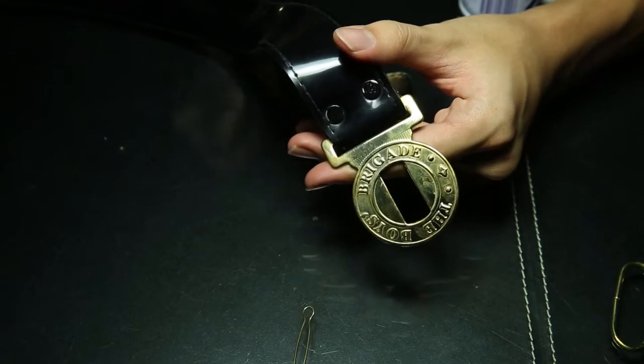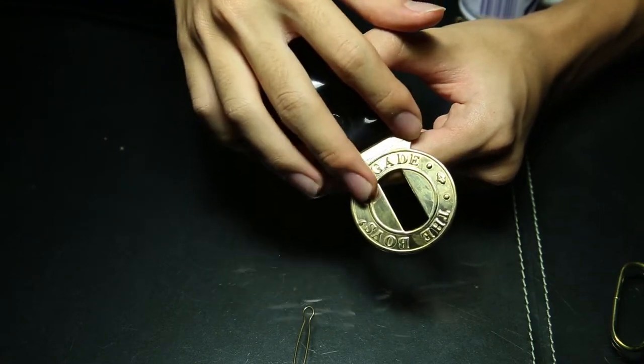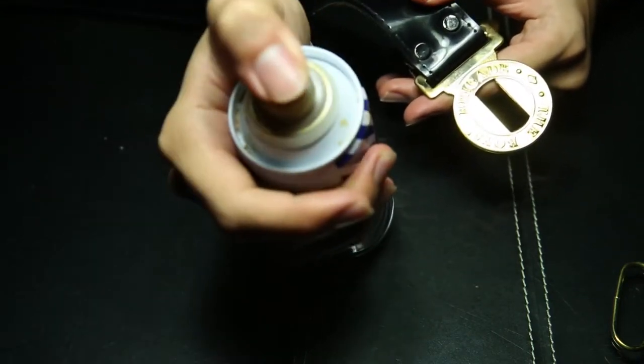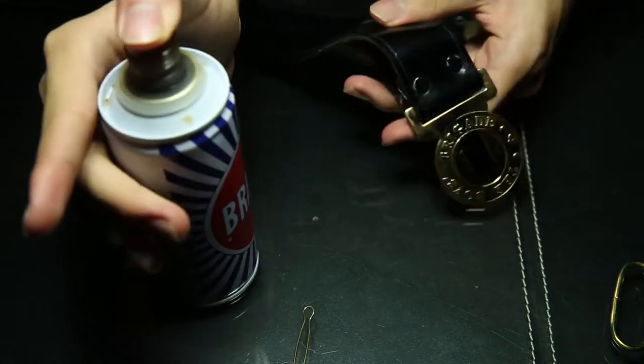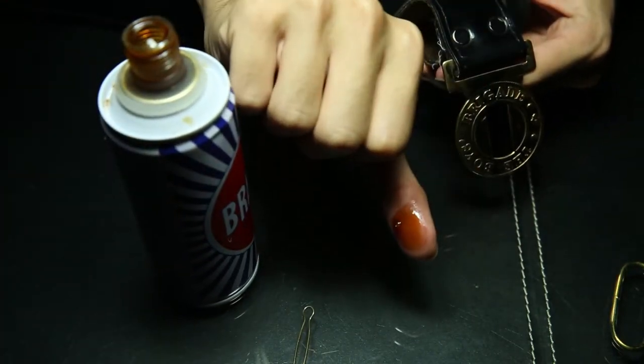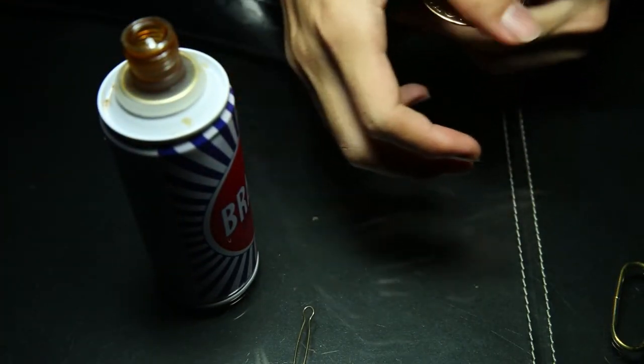The same concept applies to every part, and as you can see, this is the second part of the belt. Same thing as before. Put the Brasso on your hand, and rub it all over the belt.